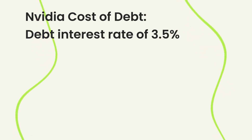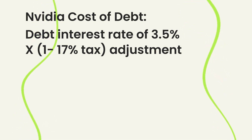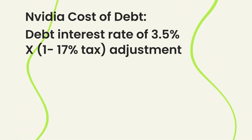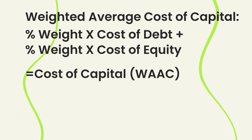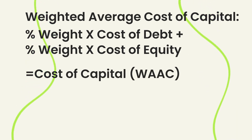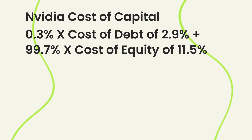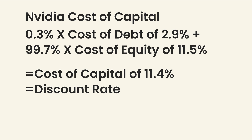For debt, it's pretty easy — it's just the interest rate on the bond. The cost of debt is about 3.5%. When we adjust for tax savings, because interest payments come before paying tax, and adjusting for NVIDIA's 17% tax rate, we get a cost of debt after tax savings of about 2.9%. All we're doing afterwards is figuring out the weighted average cost of capital: take the weight of the debt multiplied by the cost of debt, then the weight of the equity multiplied by the cost of equity. NVIDIA has very little debt relative to its total market cap, so that works out to about 11.4% in weighted average cost of capital, since it's predominantly funded by equity.